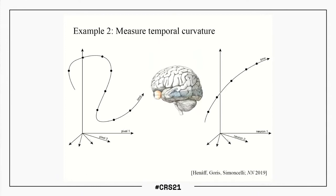That was the first example, where we used the metric properties of models to generate stimuli and test them on human observers. What we would rather do is somehow test directly the metric properties of the human visual system. We've been thinking about how to do that for quite a long time - it's difficult because of the very high-dimensional population representation and stimulus space - but we landed on an idea that turned into a method.